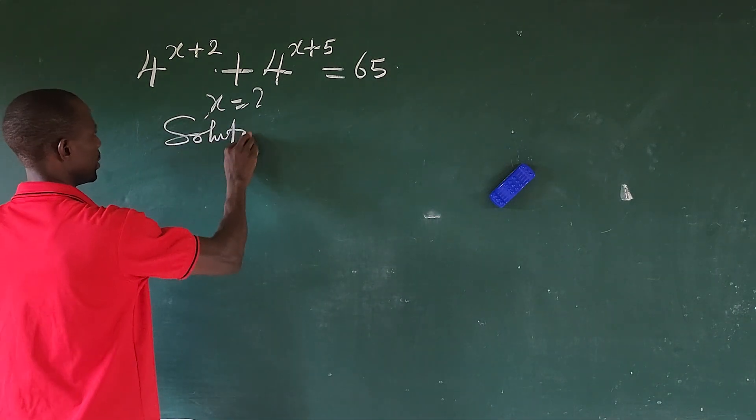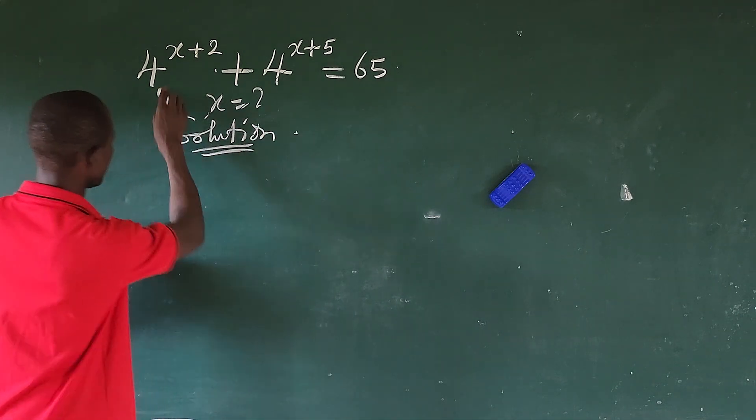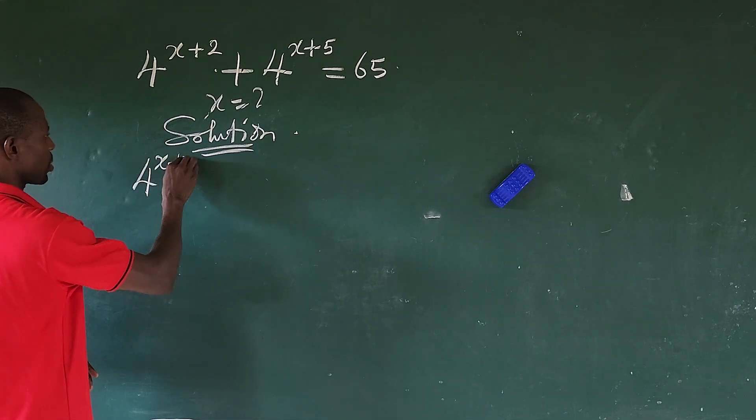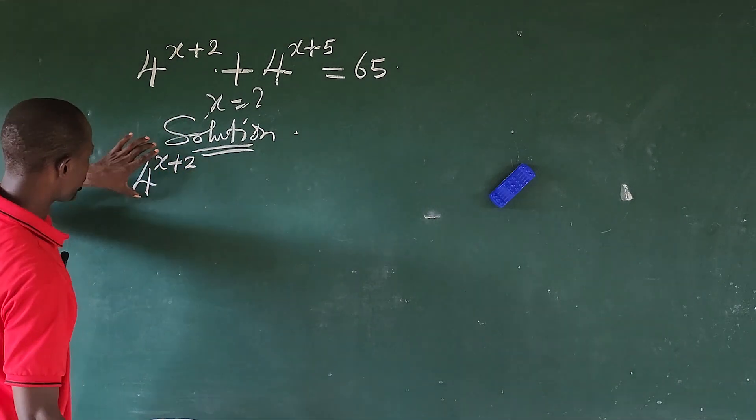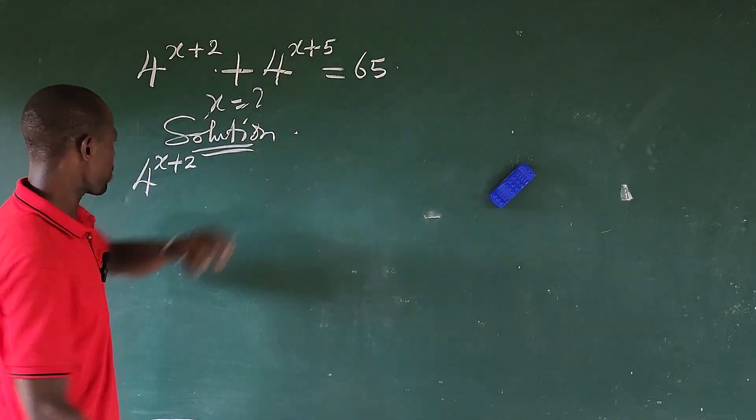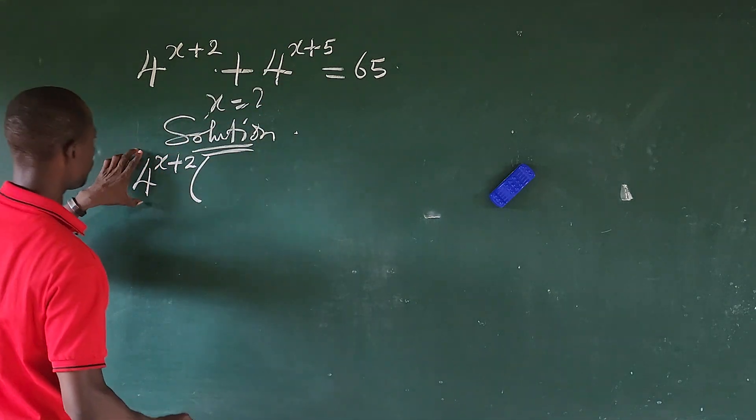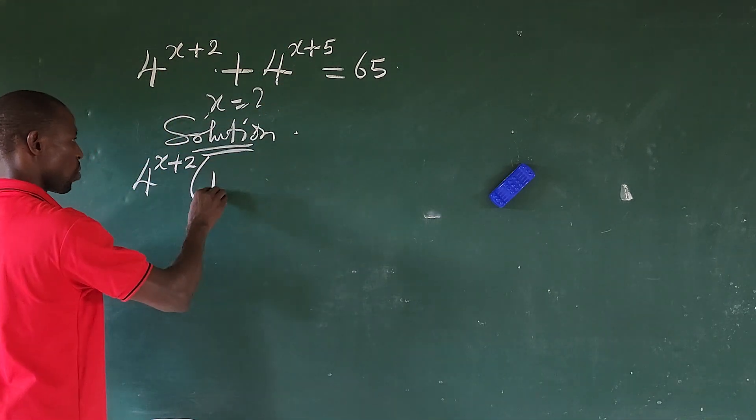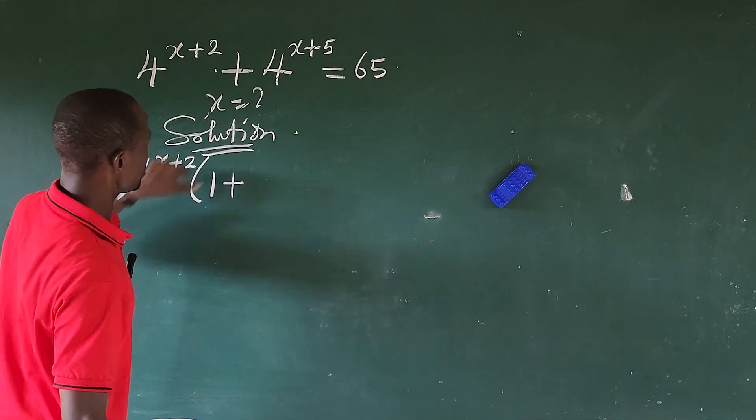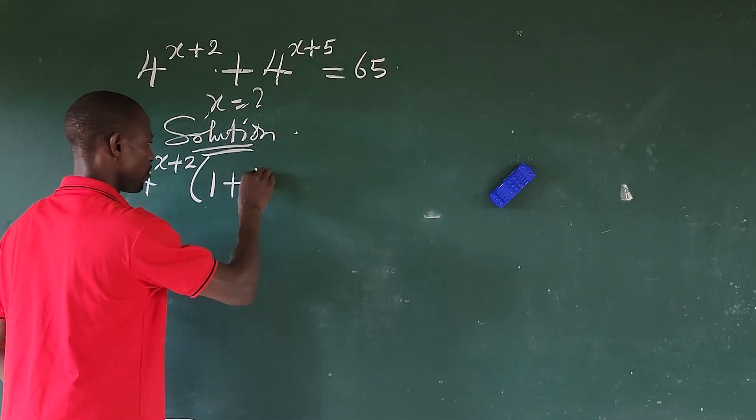So let's take our solution from here. Let me show you the trick to this. We have 4 to the power of x plus 2. All you need to do is factor this from this expression. So we have a bracket. If you use this to divide this, you are left with 1 plus 4 to the power of 3.